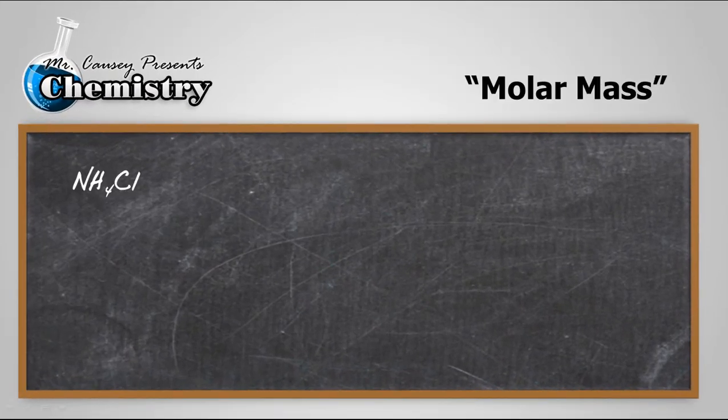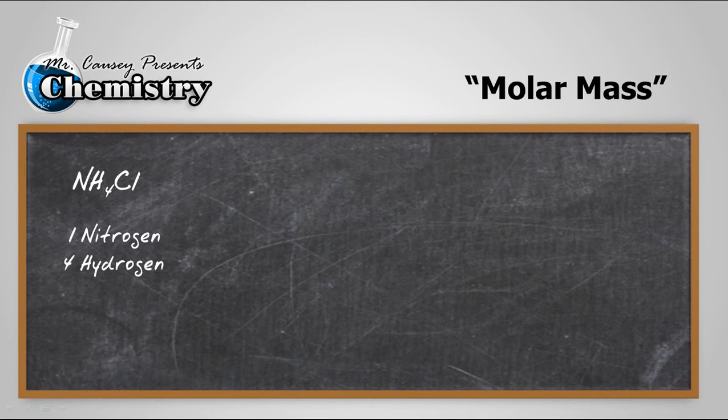Alright, let's calculate the molar mass of ammonium chloride. Notice there is one nitrogen, there are four hydrogens, and one chlorine in each of these formula units.